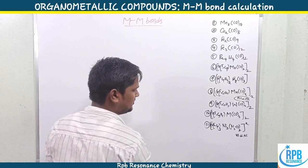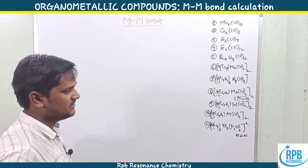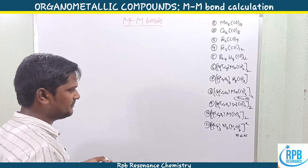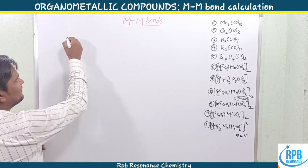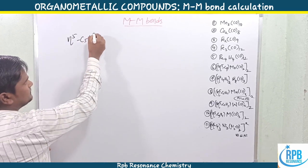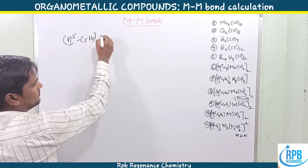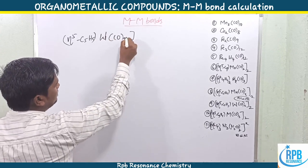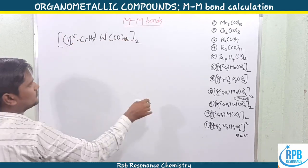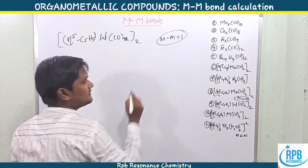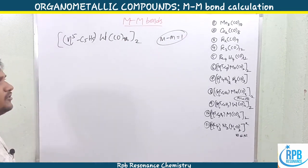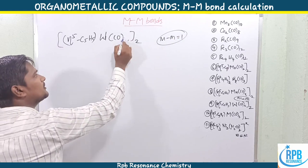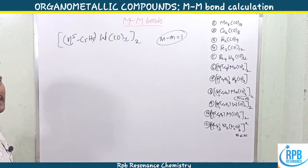Problem 9 is a similar type: [η⁵-C₅H₅W(CO)ₓ]₂, where x is unknown and the given information is that the metal-metal bond count = 1. Tungsten is in the chromium family (s¹d⁵), giving 6 outermost electrons. We need to find the number of carbonyl ligands.